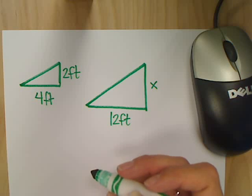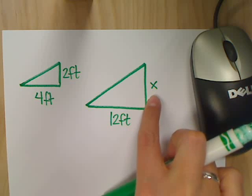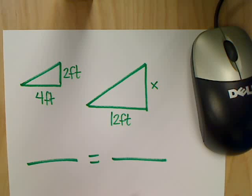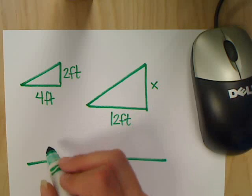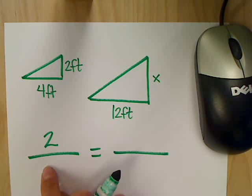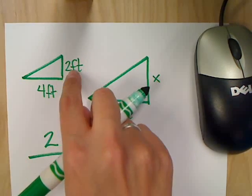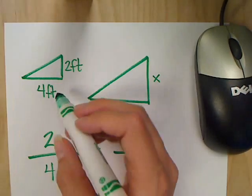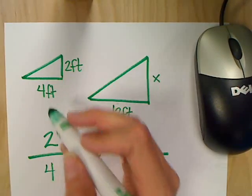I want to set up a proportion so that I can figure out what this missing side is. One ratio equal to the other. So let's say I decide to put the 2 right here. What number can I have right here below? Sure, I can have 2 and 4, which means this ratio is everything having to do with the small triangle.